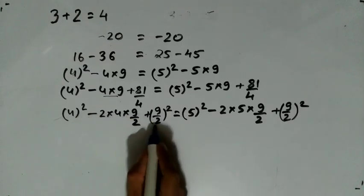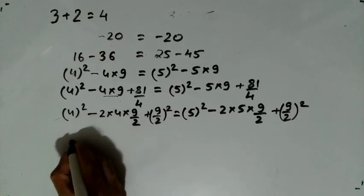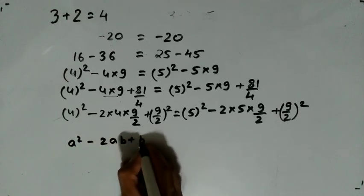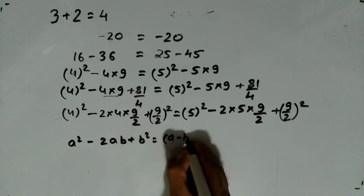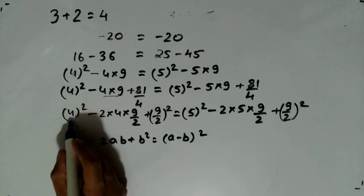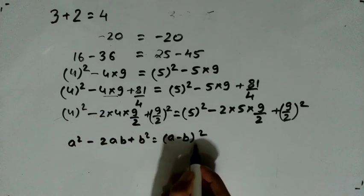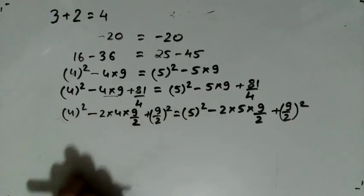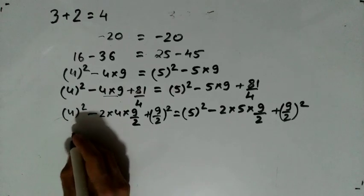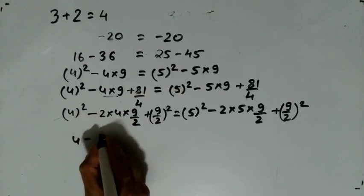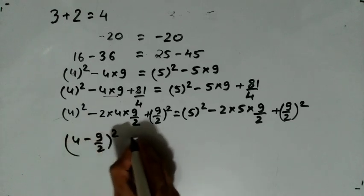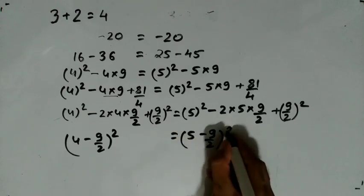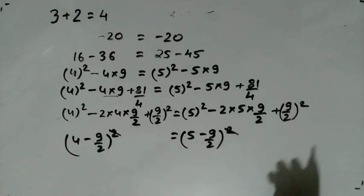a squared plus b squared minus 2ab — a squared minus 2ab plus b squared किसके form को होता है? a minus b के whole square के। यह form बन रही है: a squared minus 2ab plus b squared is equal to (a minus b) whole square। तो यह (a minus b) whole square की form में बन रहा है। Square से square cancel out हो गया।